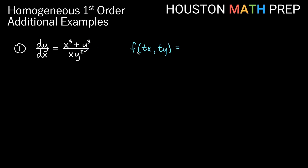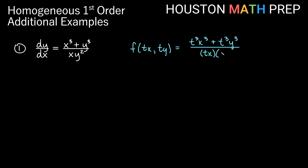We go ahead and plug in tx for x and ty for y. We get t cubed x cubed for the first term, plus t cubed y cubed on the top, and on the bottom we have tx and t squared y squared. Each of these is going to have a t cubed, which reduces, and we get the original statement for dy/dx — so we know this is homogeneous.